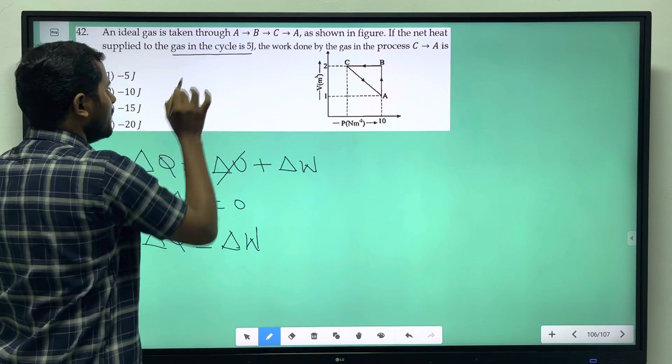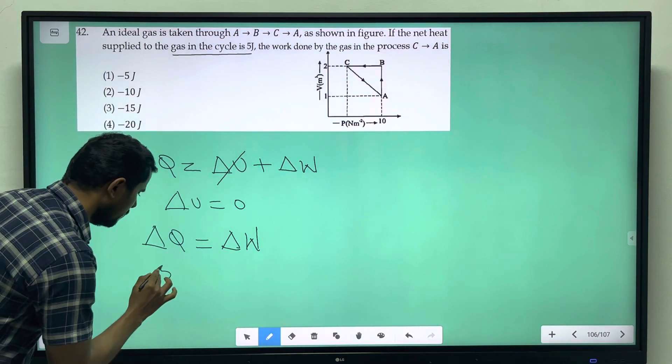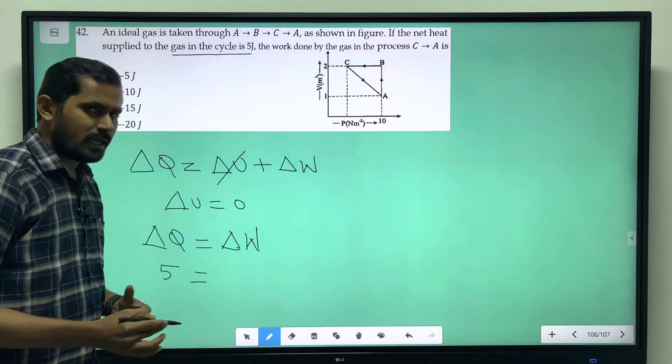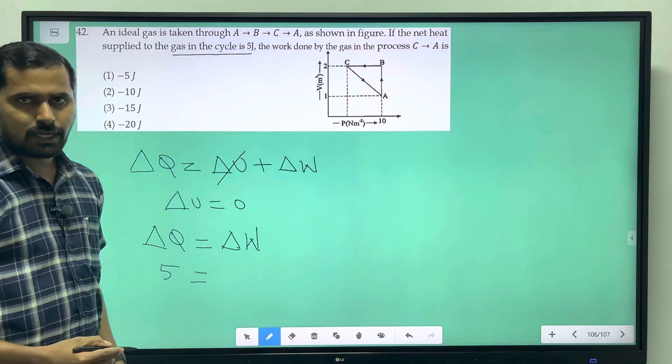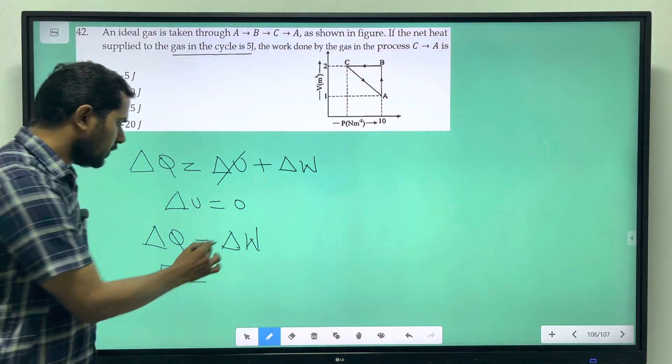Heat supplied to the gas in the cycle is 5 joule, so ΔQ = 5. Now, sign convention will be positive. Heat supplied to the gas, then sign convention will be positive.